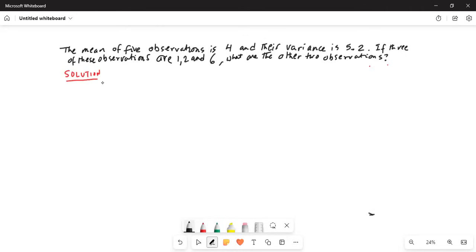So we can write 1 plus 2 plus 6 plus x plus y divided by 5 is equal to 4 from the definition of mean.